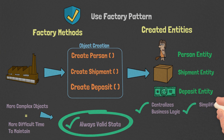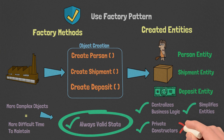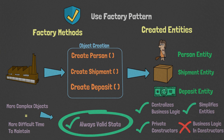This simplifies our entities and helps keep them lean. When utilizing this pattern, be sure you're using private constructors and force all object creation through our factory methods. Our constructors should do minimal work and should generally just capture the parameters needed for object creation. Be sure not to clutter your constructors with business logic — prefer public factory methods with private constructors.